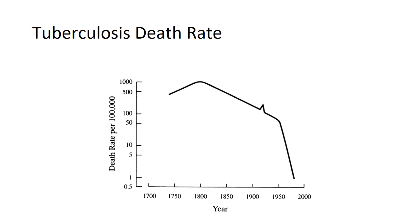The tuberculosis death rate, tracked from the mid-1700s to the year 2000, shows an increase over time, then a steady decrease with a small spike around 1900, followed by a very sharp decline starting in the 1950s. This can be attributed to the development of antibacterial agents specifically targeting tuberculosis, with a major push in the 1940s and 50s to get tuberculosis under control, as it was a leading cause of infectious disease death in the United States and worldwide.